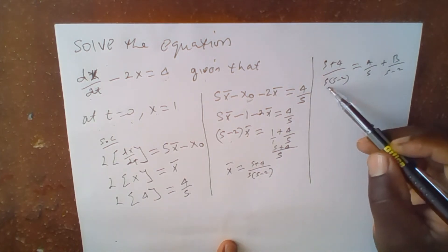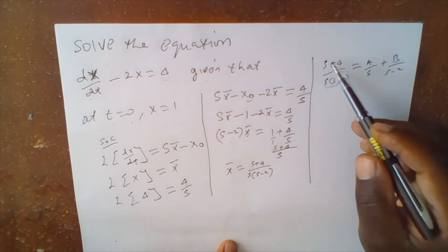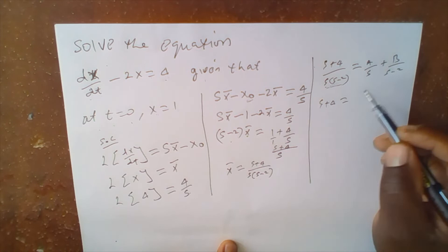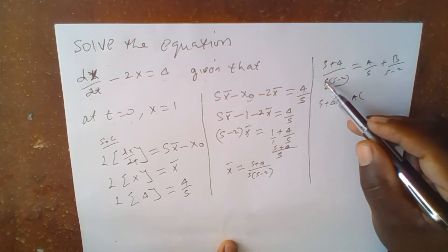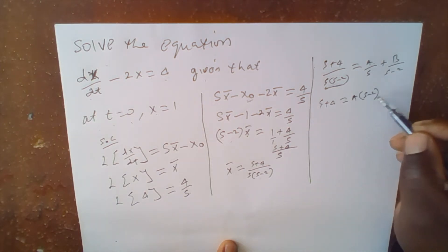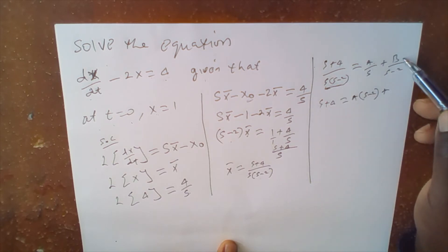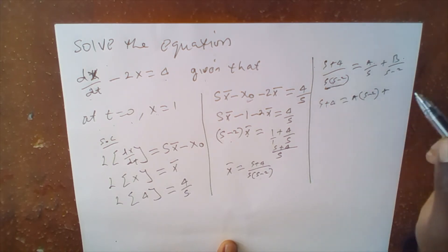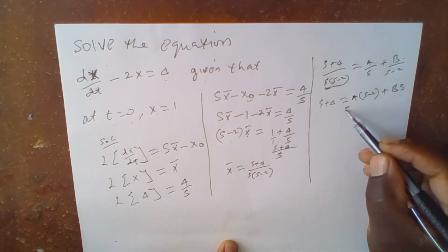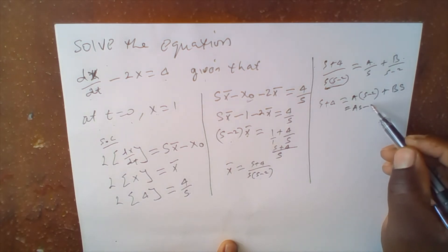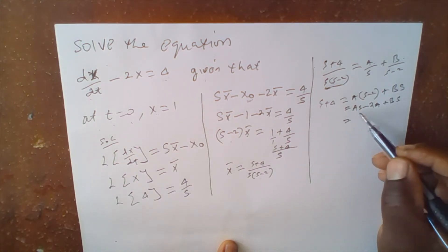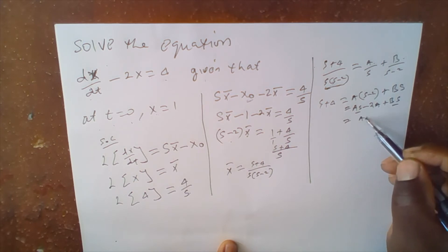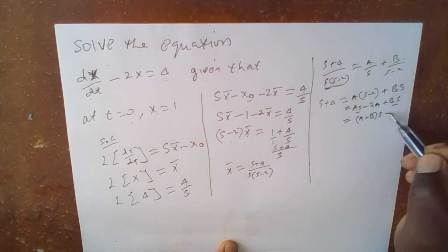Multiplying both sides by the original denominator s(s minus 2), we get: s plus 4 equals A(s minus 2) plus Bs. Expanding the bracket gives: As minus 2A plus Bs. Grouping like terms, this equals (A plus B)s minus 2A.